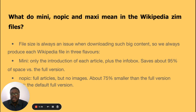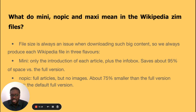What do mini, nopic, and maxi mean in Wikipedia ZIM files? File size is always an issue when downloading large content, so each Wikipedia file is produced in three flavors: mini, nopic, and maxi. In the mini ZIM file, you have only the introduction of each article plus the info box, and this saves about 90 to 95 percent of space versus the full version.